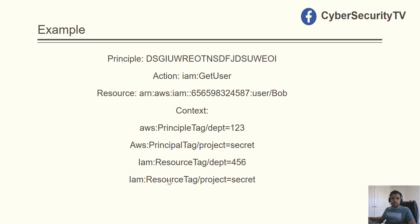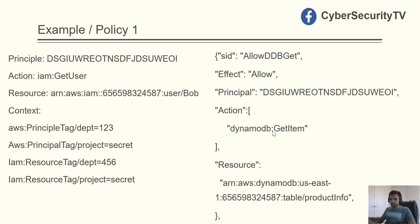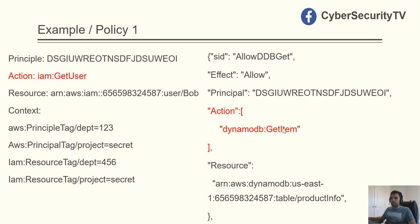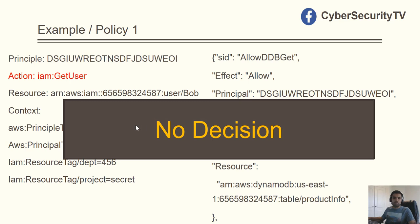The action is IAM GetUser, the resource is this particular user, and there's also context information kept by IAM — not visible to us, but available during evaluation. Policy one is named AllowedToGetItem, effect is Allow, action is DynamoDB GetItem. First it matches the principal — that's good. Then it checks the action: DynamoDB GetItem versus IAM GetUser — these don't match. Since the action doesn't match, no decision is made based on this policy.